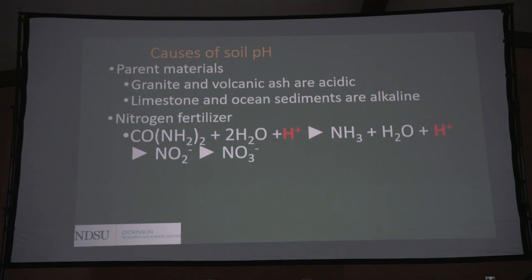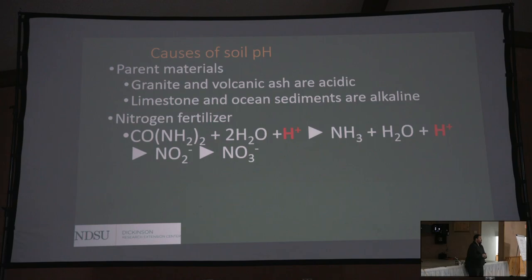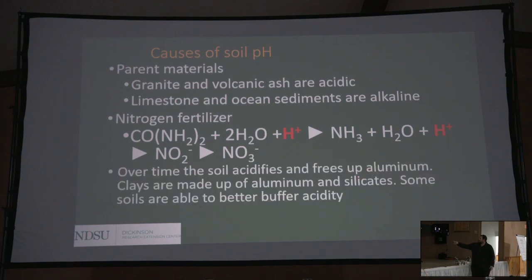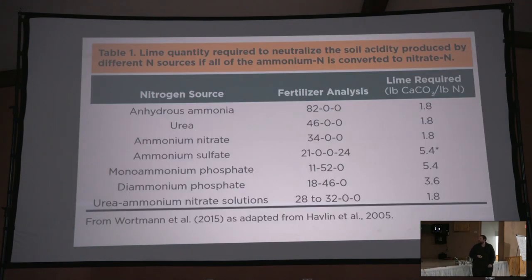Hydrogen gets released during the nitrification process. Hydrogen is the most common element in the entire universe — that's what the sun and stars are predominantly made of, so there's no shortage of it. That hydrogen gets added to the active soil pool, which influences pH and increases soil acidity. Over time, soils acidify. They're also going to free up aluminum, and aluminum toxicity can become a snowball effect on soil pH.